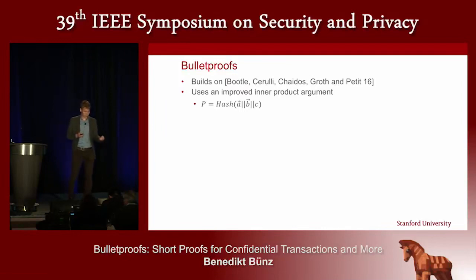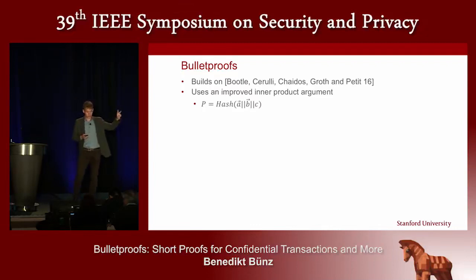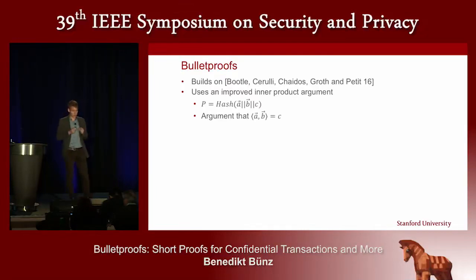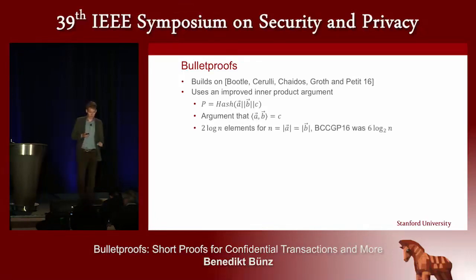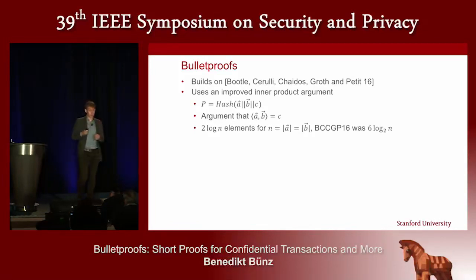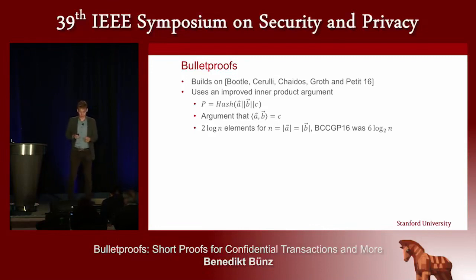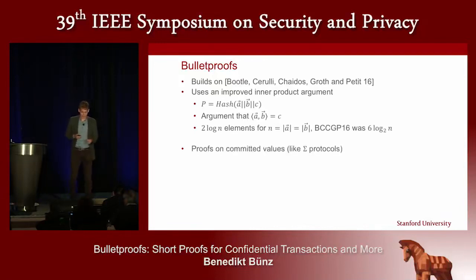Bulletproofs use a so-called inner product argument, improving on the Boodle et al. paper. The inner product argument is a proof that, given commitments to two vectors A and B and a scalar C, the inner product between A and B equals C. The important property is that it is logarithmic in the size of the vector — to convince you this statement is true, I only need to send 2 log n cryptographic elements (32 bytes each at 128-bit security). This improves from the previous version which required 6 log n elements.